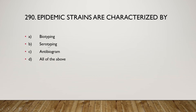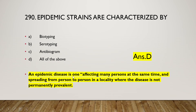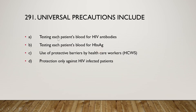The next question is: epidemic strains are characterized by (A) biotyping, (B) serotyping, (C) antibiogram, or (D) all of the above. The right answer is option D — all of the above. An epidemic disease is one affecting many persons at the same time and spreading from person to person in a locality where the disease is not permanently prevalent.